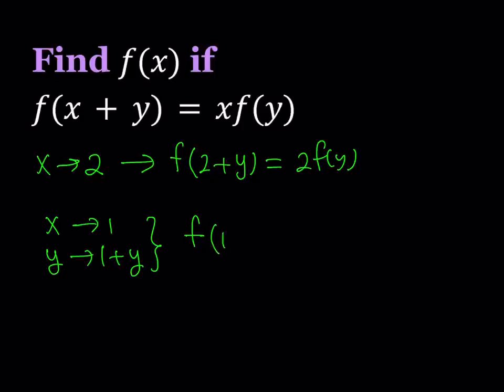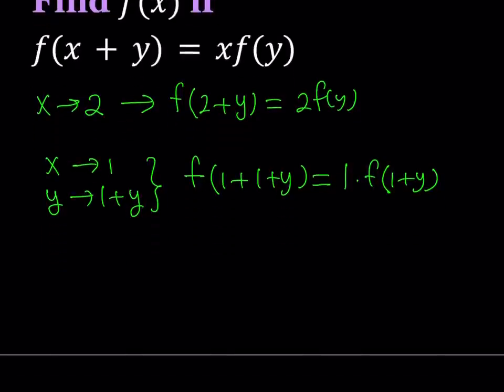I get f(1+(1+y)). And then on the right-hand side, x is going to be 1 and y is going to be 1+y. Now, some people are going to be questioning, how can you replace y with 1+y? Well, it's possible because 1+y is another variable. You can replace any variable with another variable as long as you're not violating any conditions. So this gives us something nice. F(2+y) = f(1+y). That's an interesting relationship because we're adding different things to y, but we're getting the same answer.